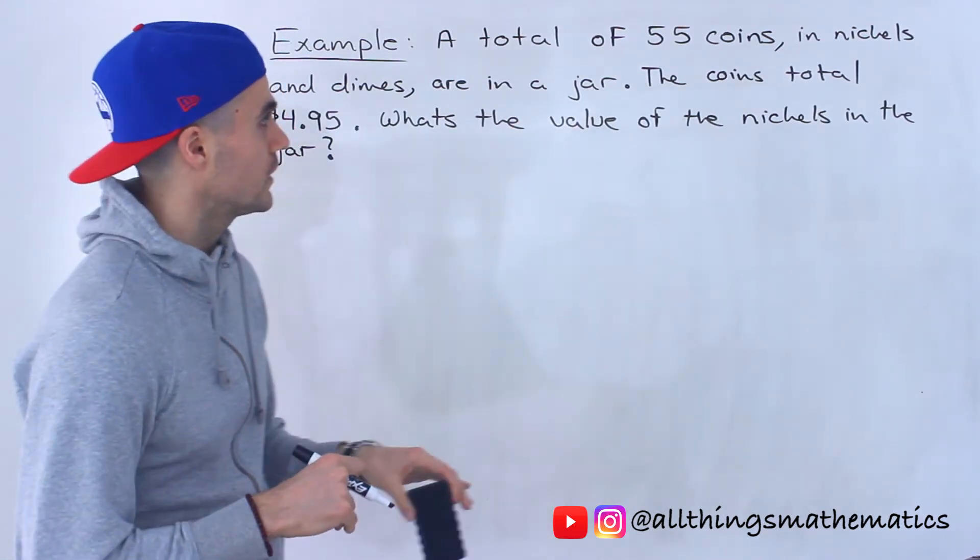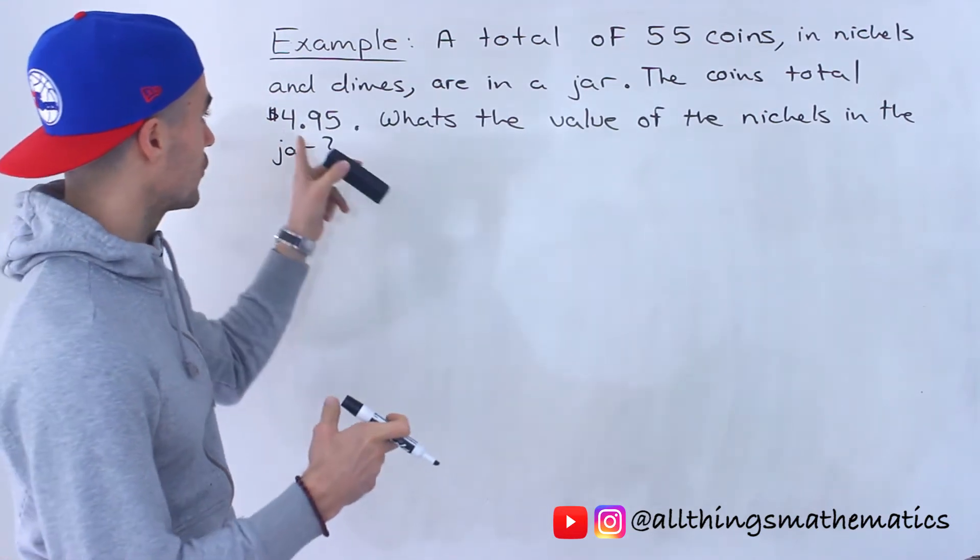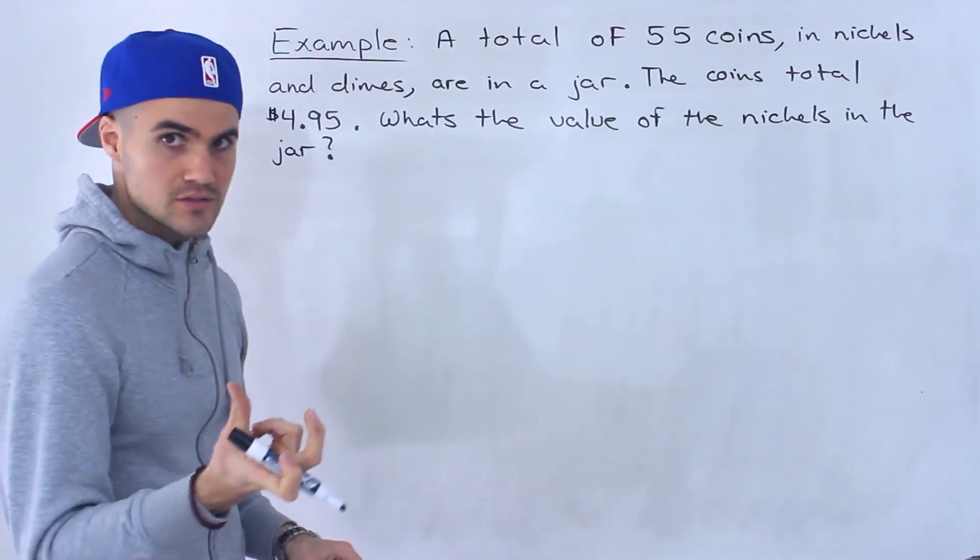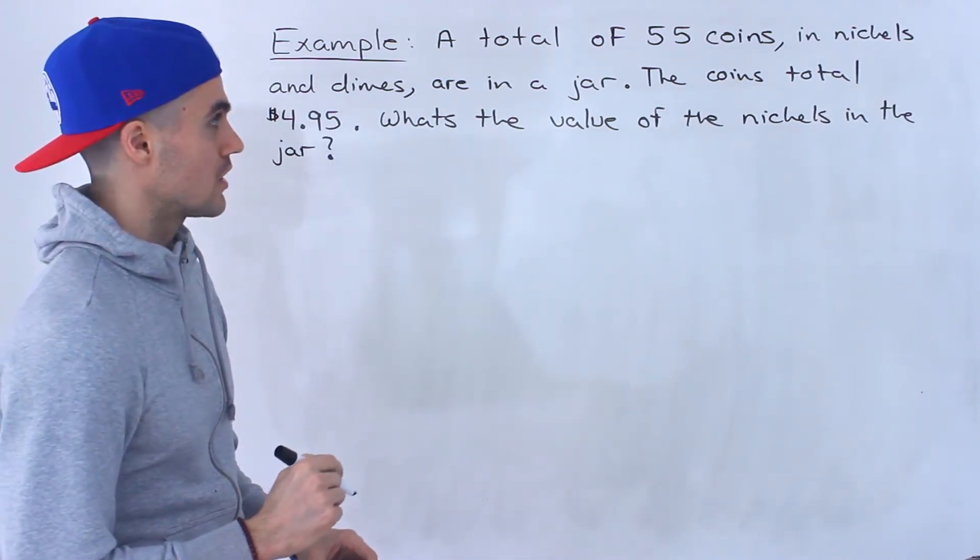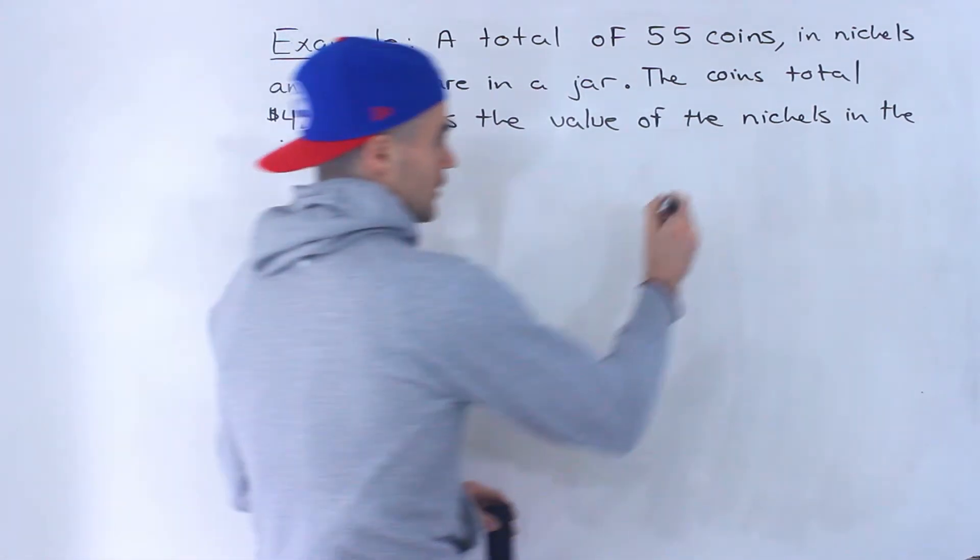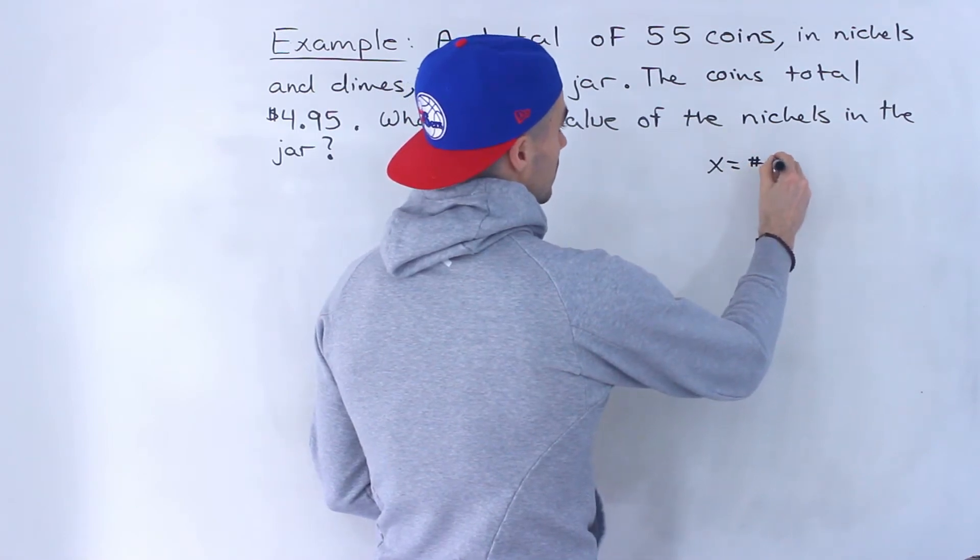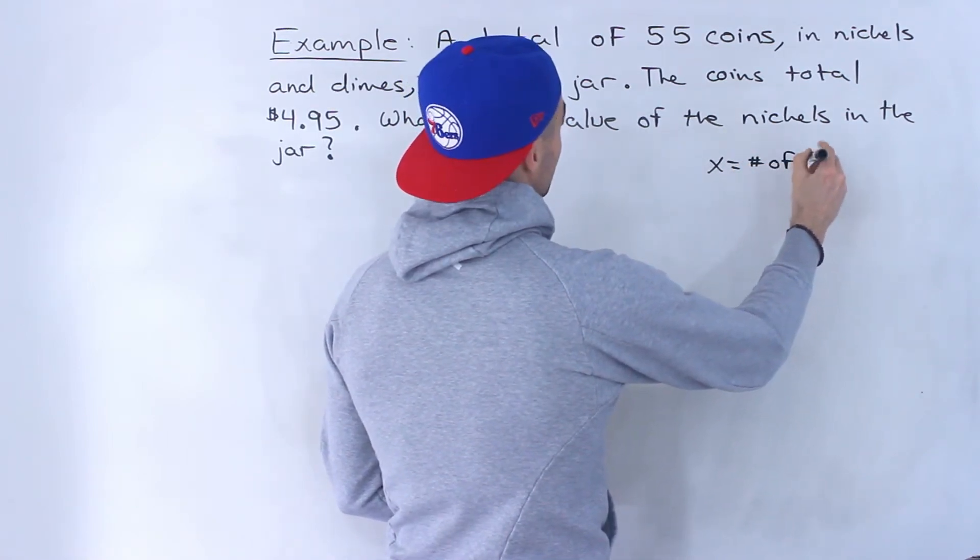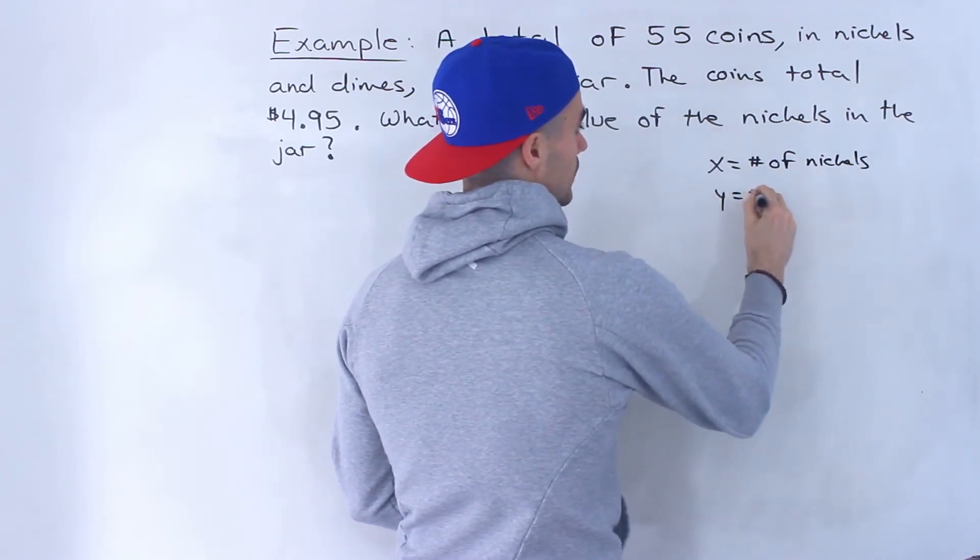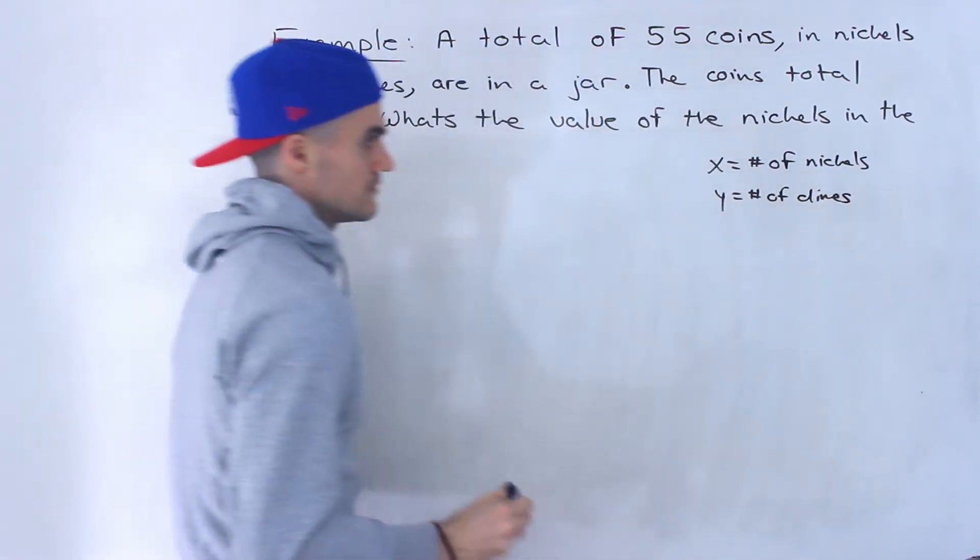So a total of 55 coins in nickels and dimes are in a jar. The coins total $4.95 and we have to figure out what's the value of the nickels in the jar. So what I'm going to do is introduce two variables. I'm going to let x equal the number of nickels in the jar and then I'm going to let y equal the number of dimes in the jar.